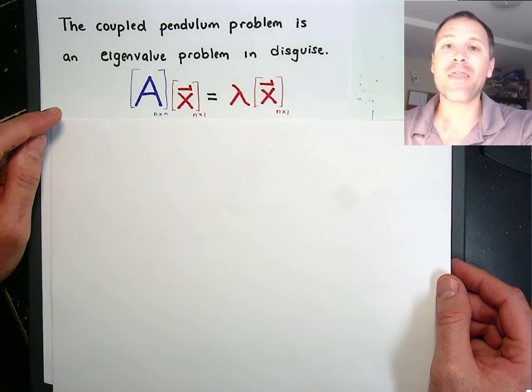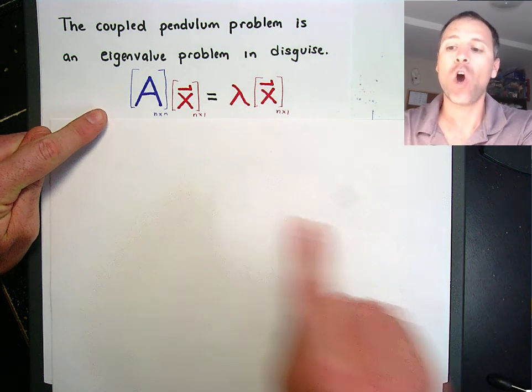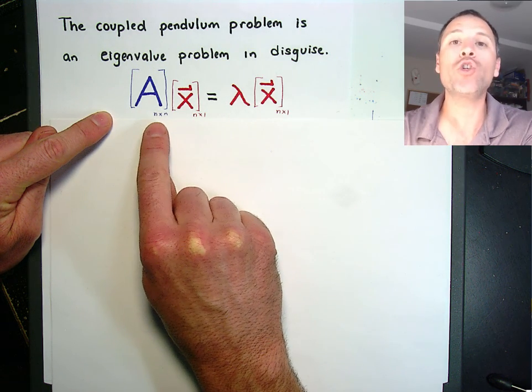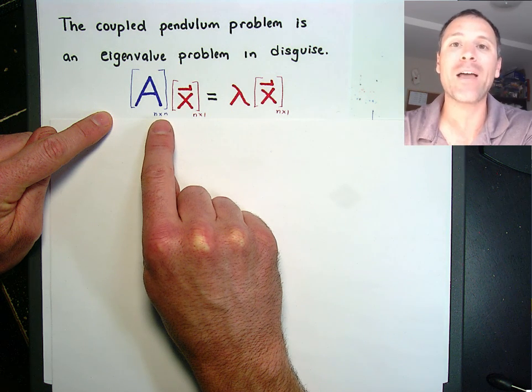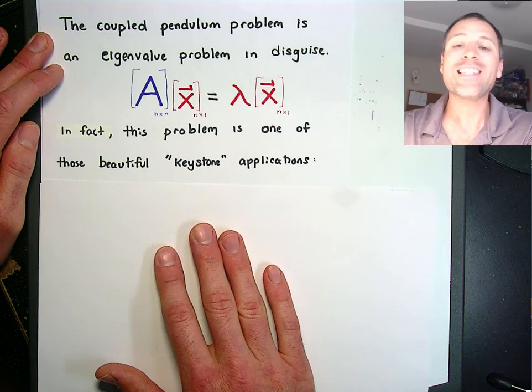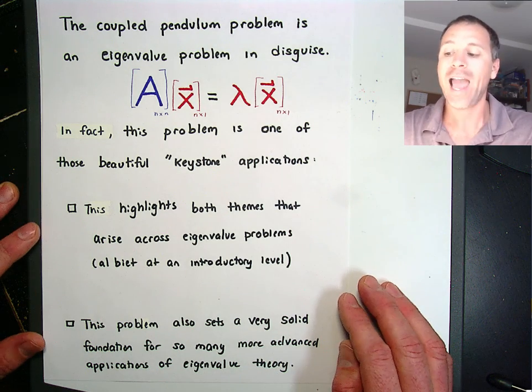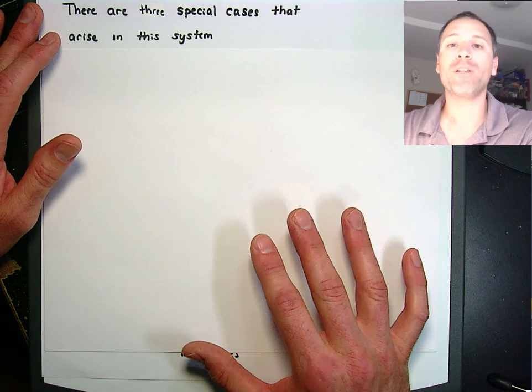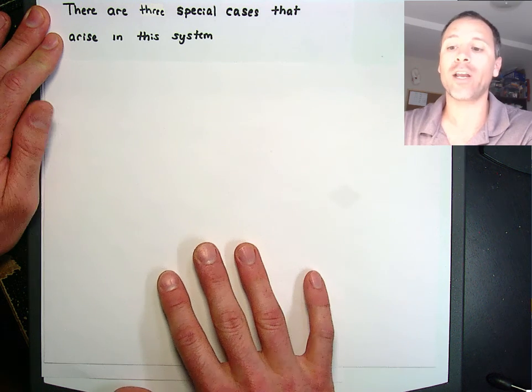As I claimed previously, this coupled pendulum problem is actually an eigenvalue problem in disguise, where the matrix A is 2 by 2, because we have two components in our system. We have two separate masses that we want to track the position of as we observe this system. This is a keystone application. This problem highlights both themes that we saw in our introductory video, and it sets the foundation for more advanced stages. As we study this problem and get more familiar with the dynamics, I want to put a few ideas in your head so that you can return to these over and over again.